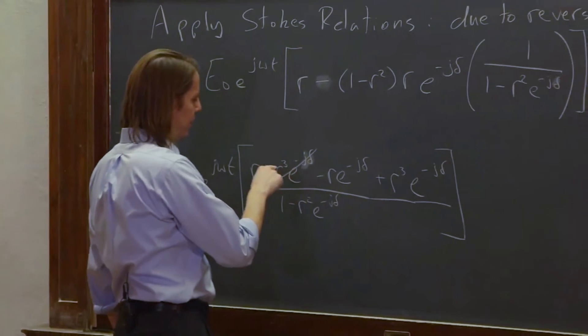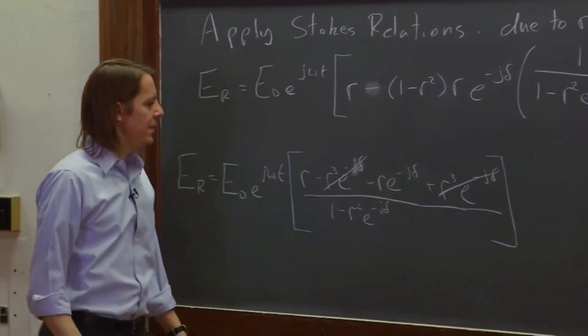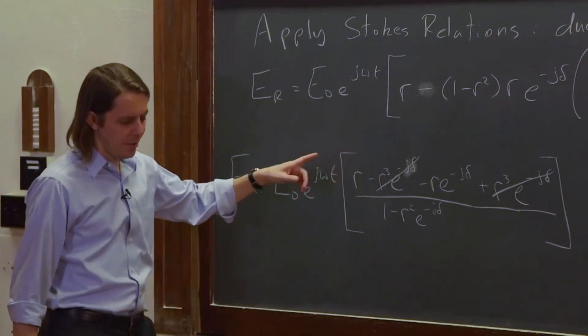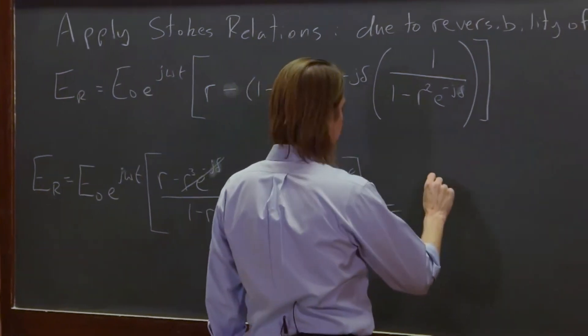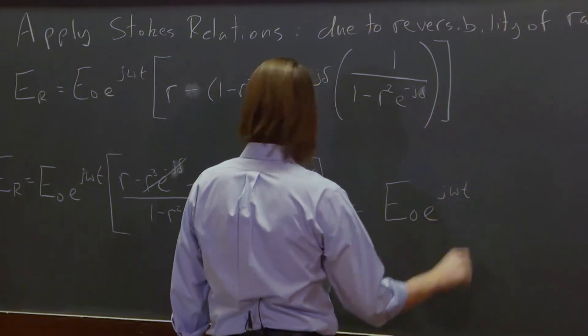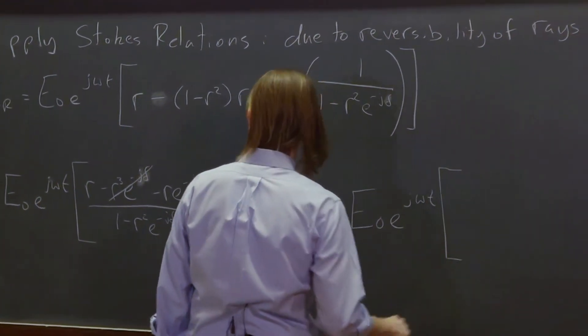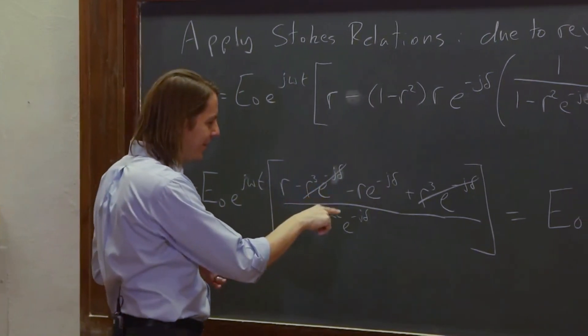So we're left with an r there. So we can rewrite this a little bit more as e not e to the minus j delta. So r times and you almost think it's going to cancel further, right? You pull out an r and it's 1 minus, oh, not r squared.